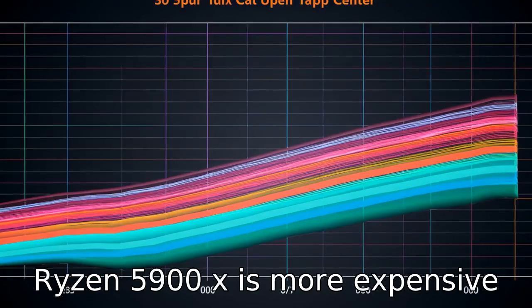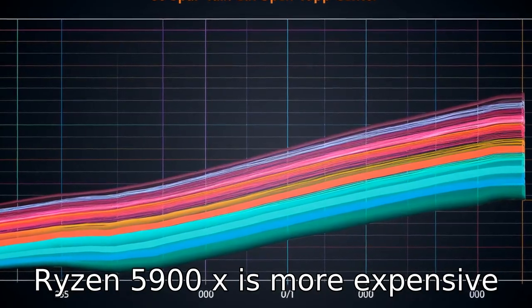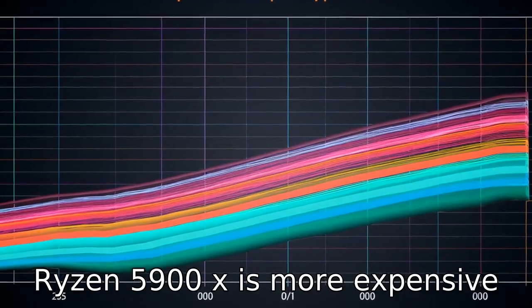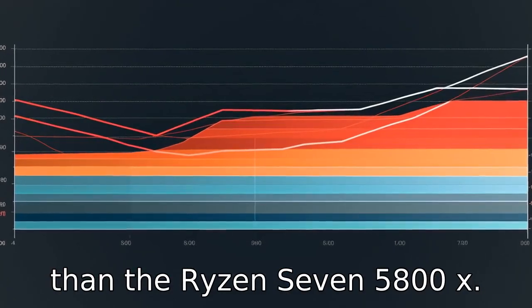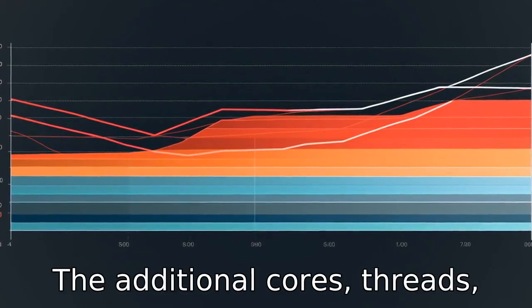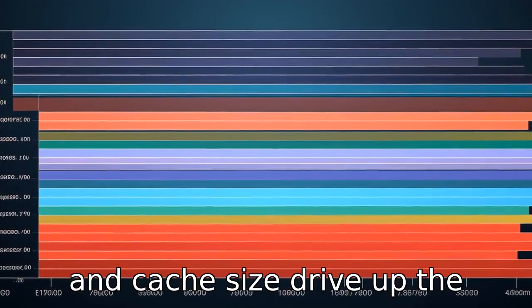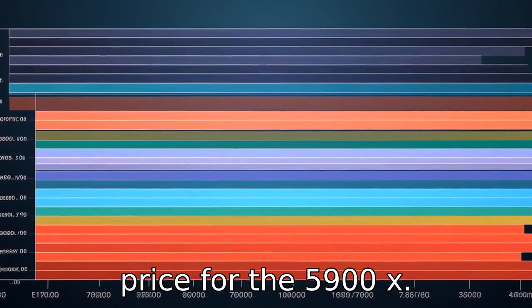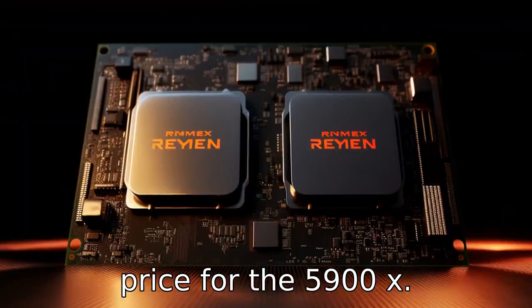Difference 7: the Ryzen 9 5900X is more expensive than the Ryzen 7 5800X. The additional cores, threads, and cache size drive up the price for the 5900X.